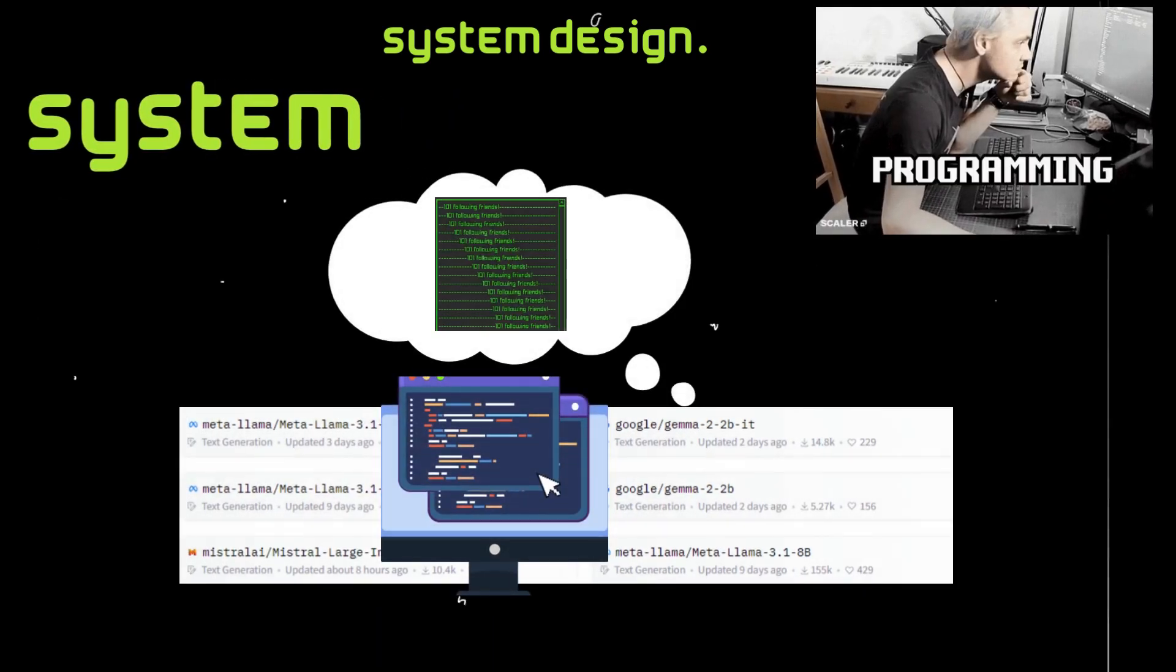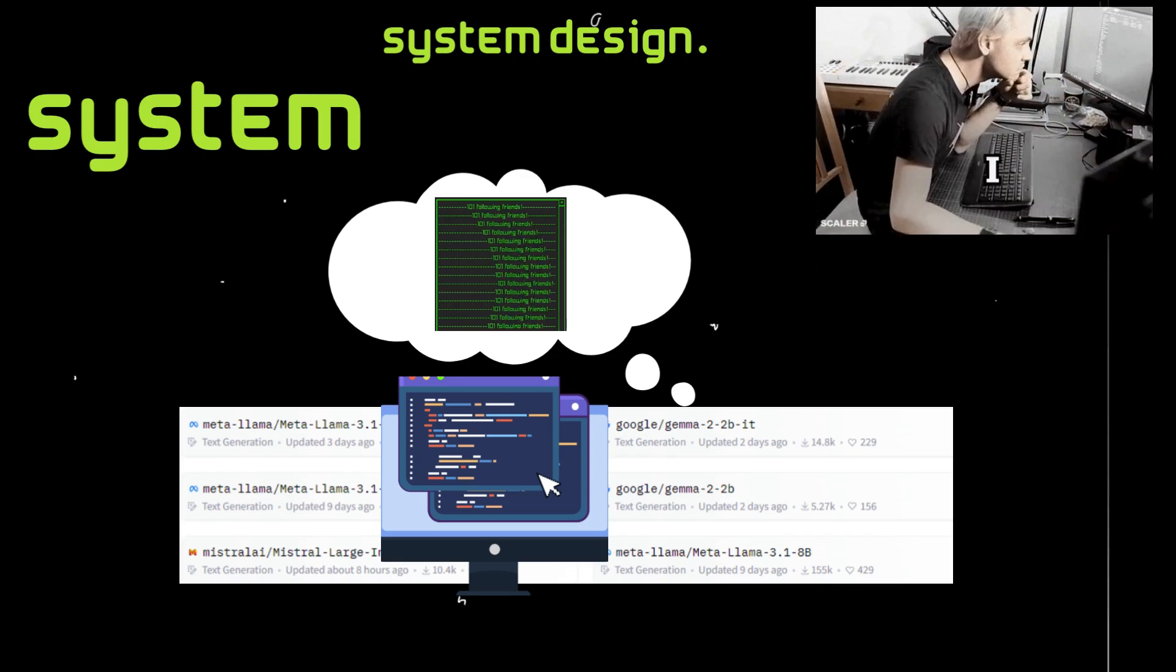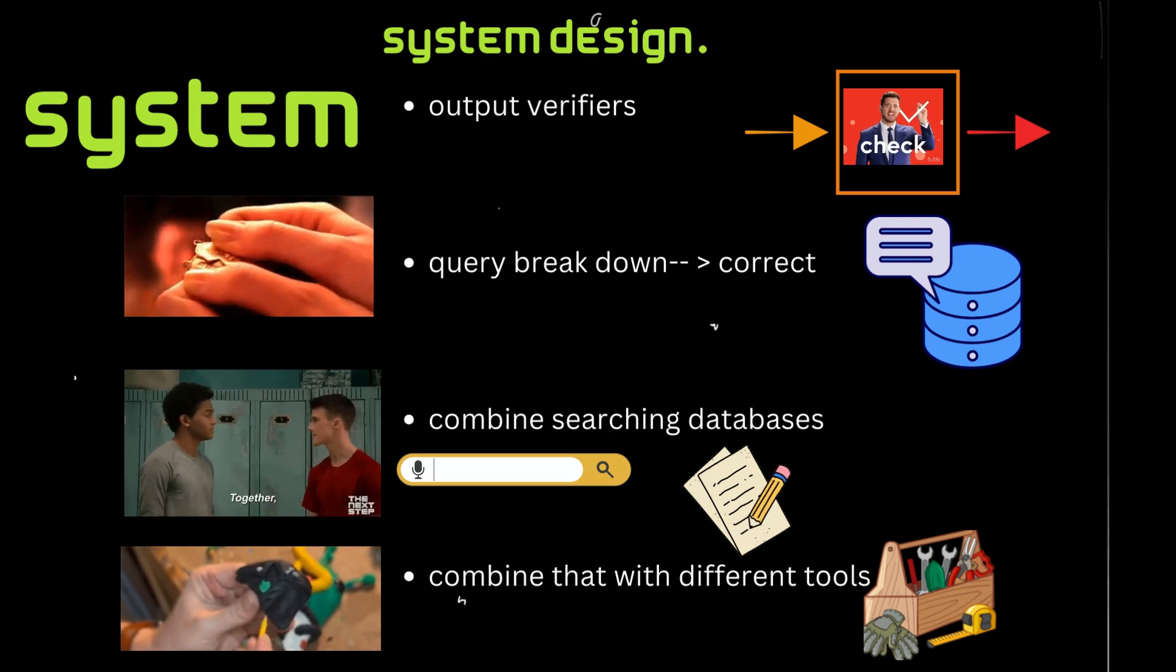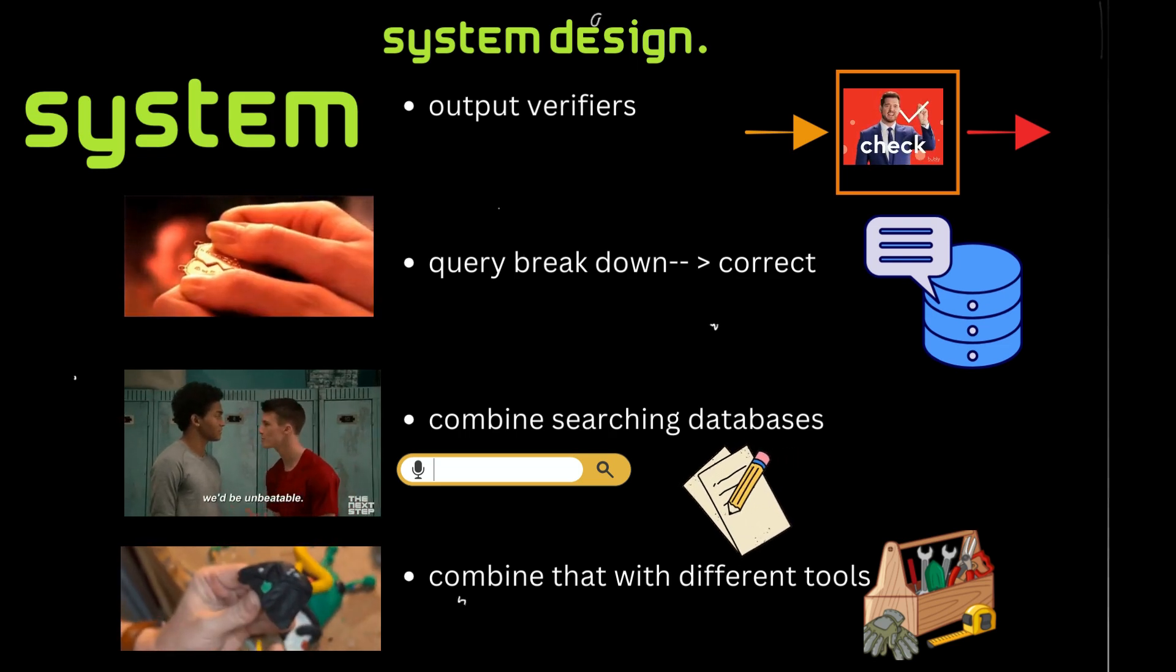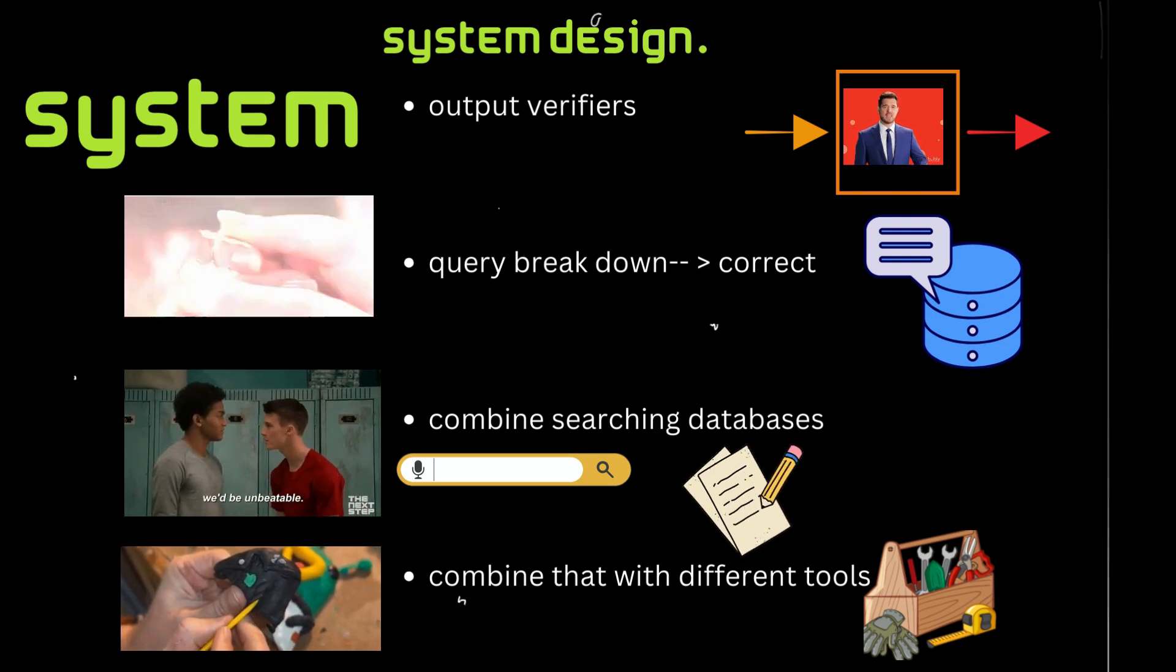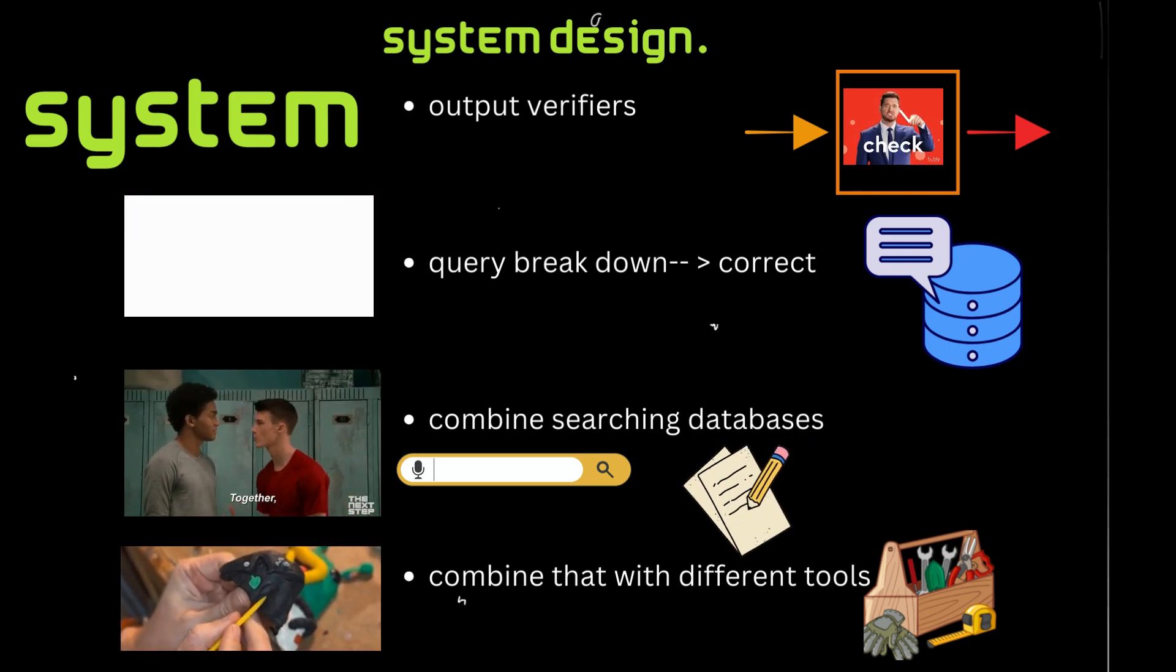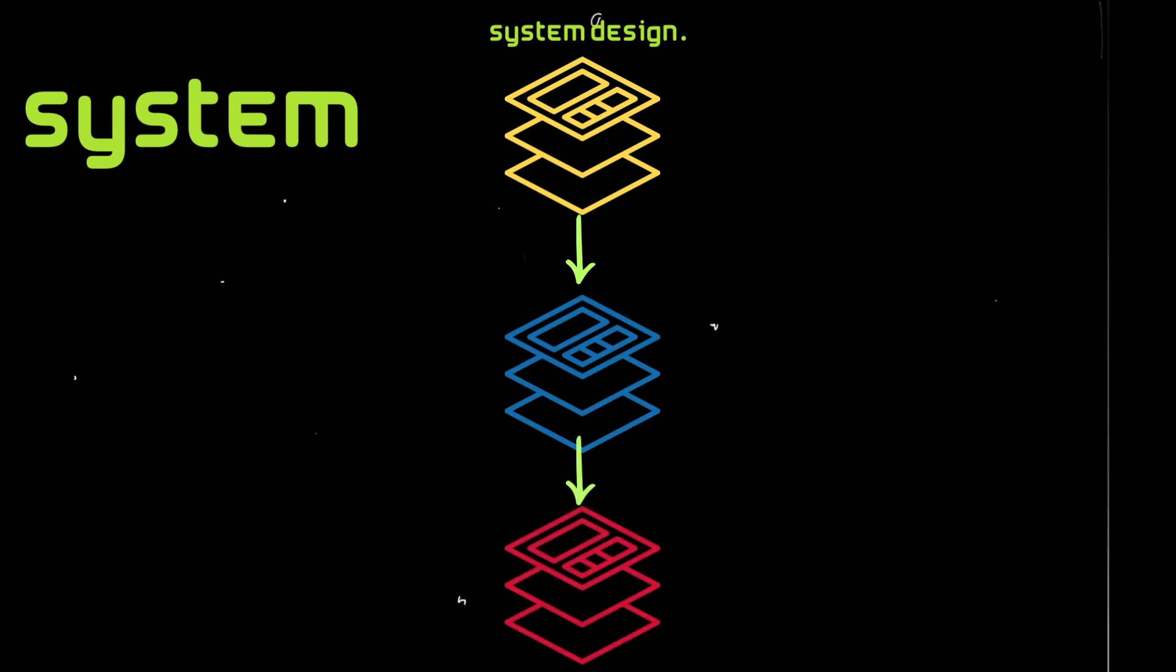I also have programmatic components that can come around it. I can have output verifiers, programs that can take a query and then break it down to increase the chances of the answer being correct. I can combine that with searching databases, with different tools. When we're talking about a system approach, I can break down what I desire my program to do and pick the right components to be able to solve that. And this is inherently easier to solve for than tuning a model. That makes this much faster and quicker to adapt.